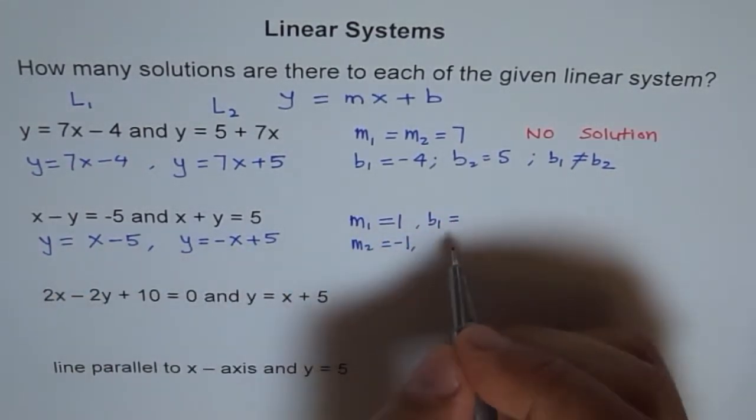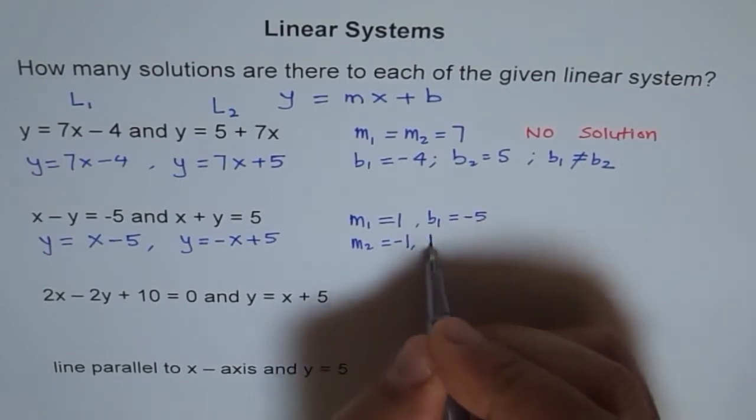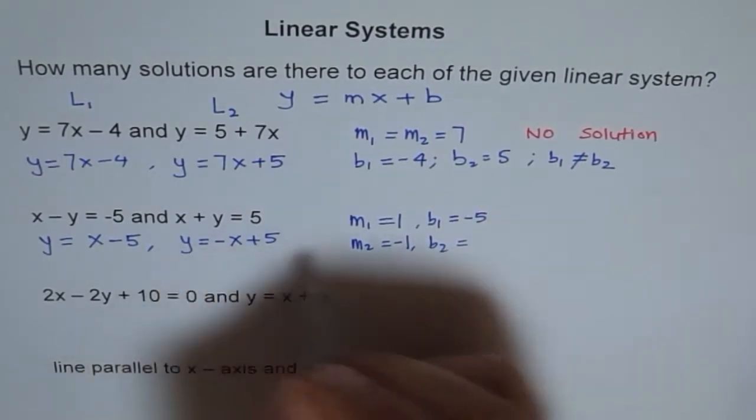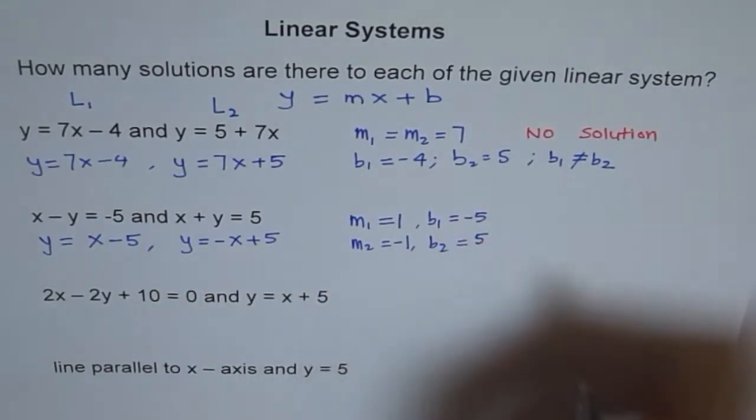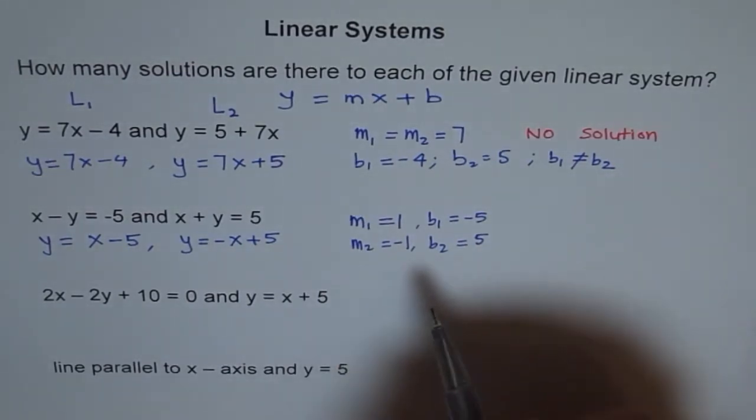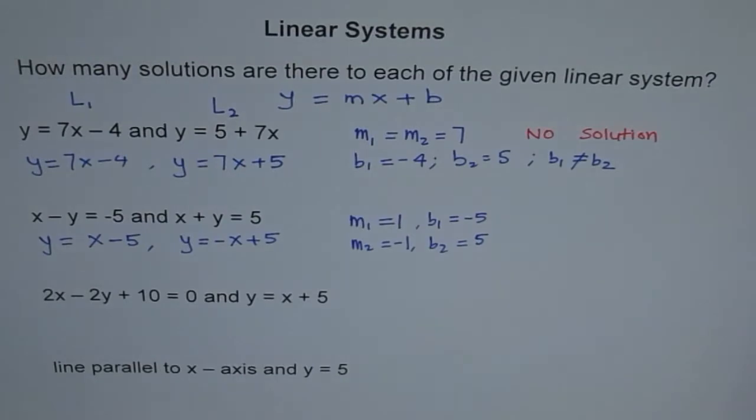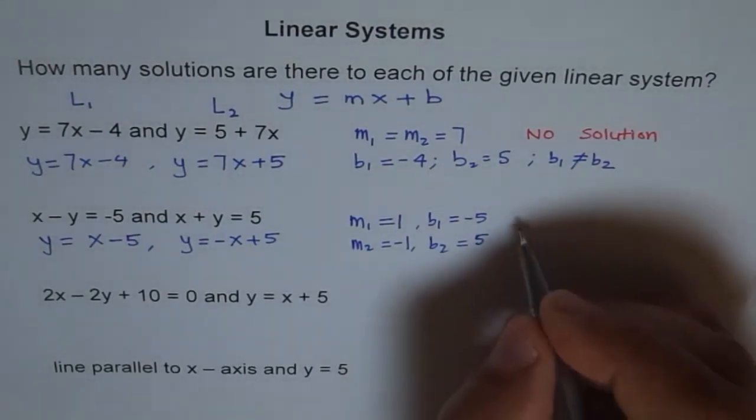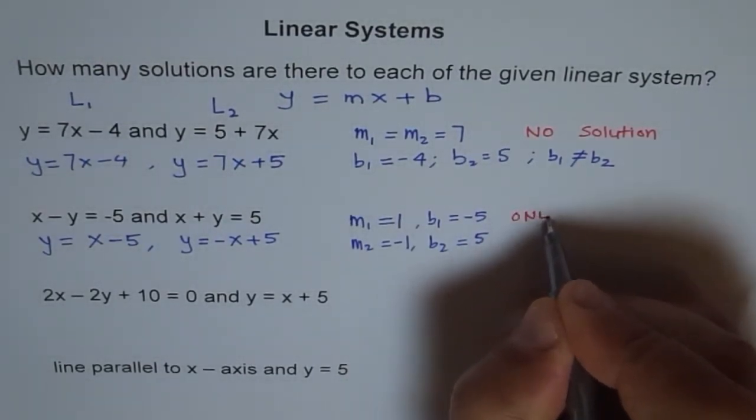And b1 and b2 are also different. b1, the y-intercept is minus 5 here. And in the second equation, the y-intercept is plus 5. They are different. So these two lines have different slopes and if the lines have different slopes, they will intersect at only one point. So they have one solution.